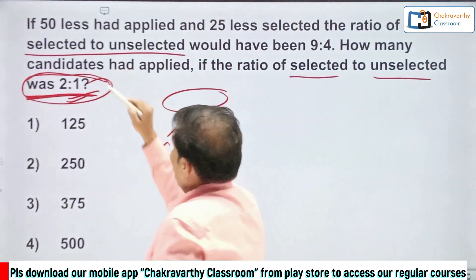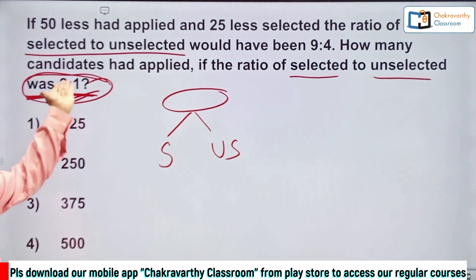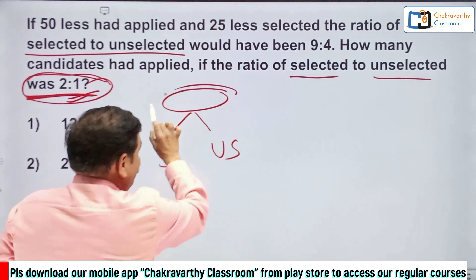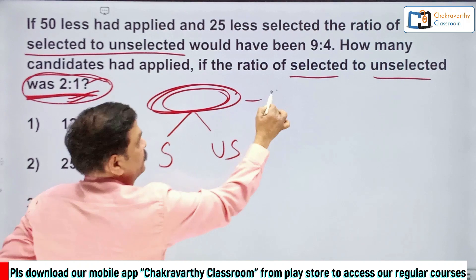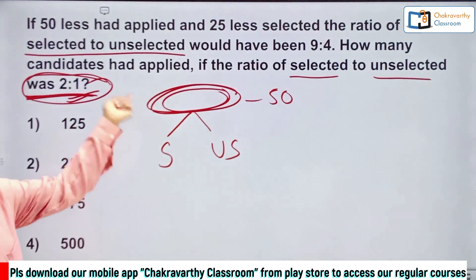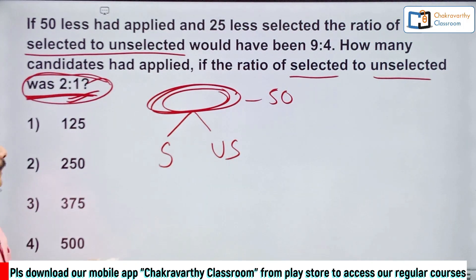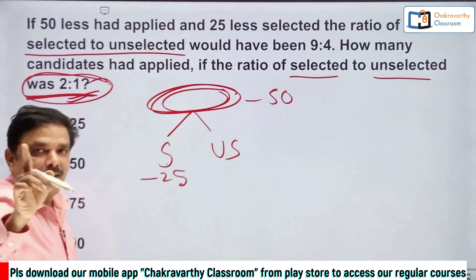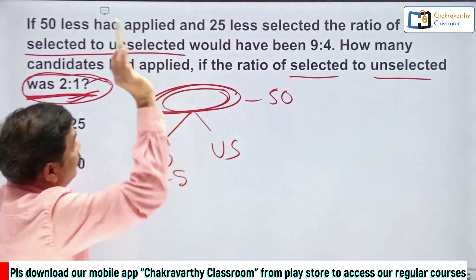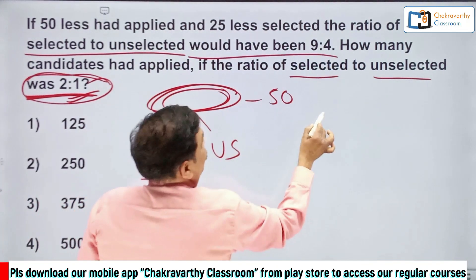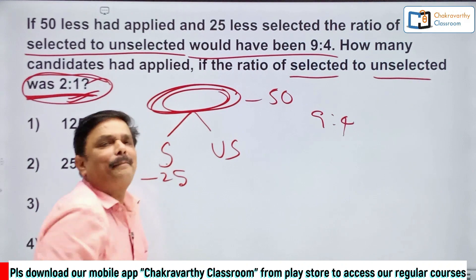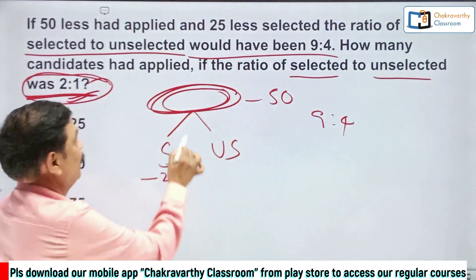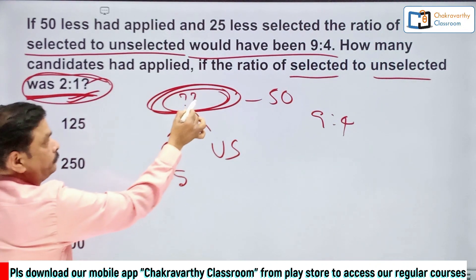Then what happened in the imagined scenario? If 50 less had applied, that means from the total, minus 50. And 25 less had been selected, so from the selected, minus 25. Then the ratio would have been 9:4 — it's not what actually happened, but what would have been. Now we need to find out what the total is.